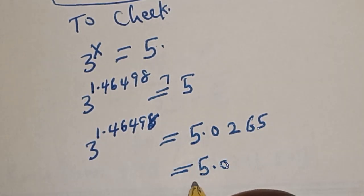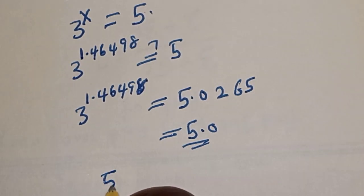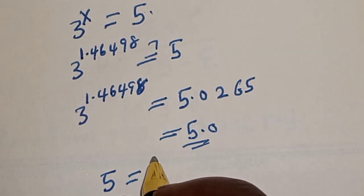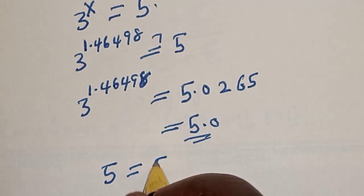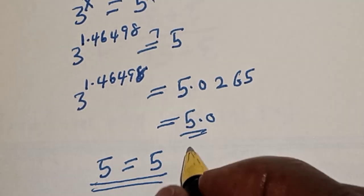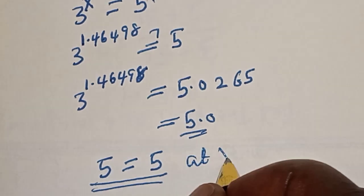So the left hand side 5 is equal to the right hand side 5, which satisfies the given equation at s is equal to 1.46498.